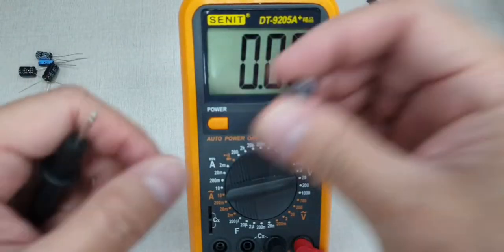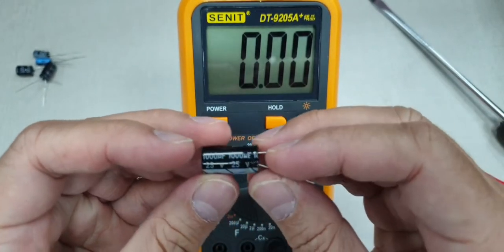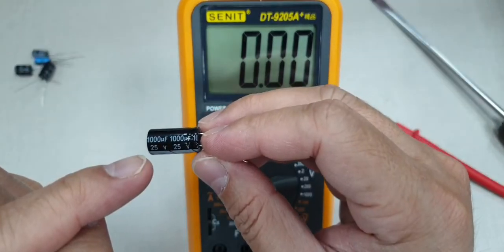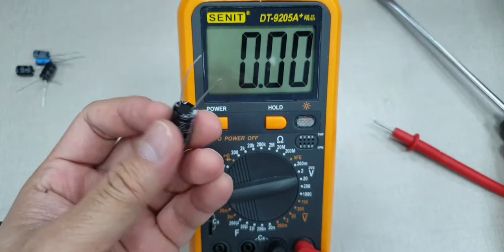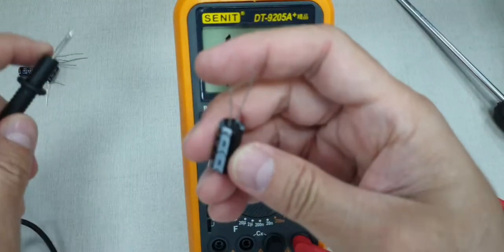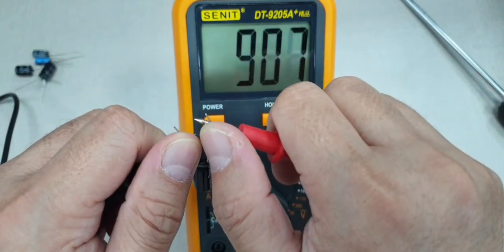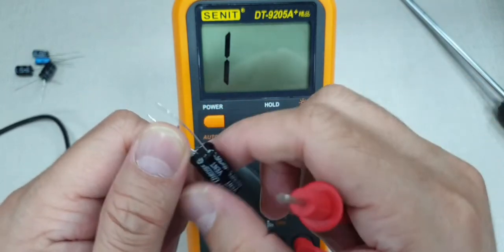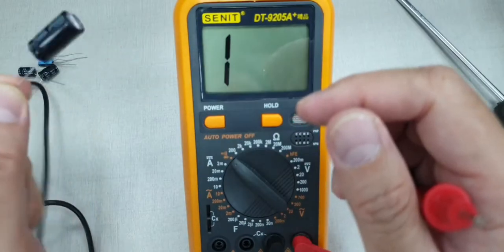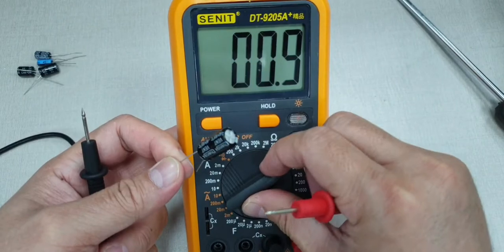So last one, here's a larger capacitor. It has a 1000 microfarad value and 25 volts. Let's discharge, set to continuity, and charge it again. Wow, as you can see, it took a while to charge this because it has a larger capacity than those smaller ones. So let's check for its discharging rate again.